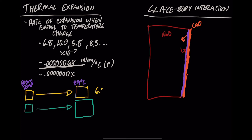Now, if this body has an expansion of 6.8 and the glaze has an expansion of 8.0, when that glaze expands — even though they were fused perfectly on top of each other — it puts stress on the glaze because it can't expand as much as it wants to. To release that stress, it causes micro-cracks all the way down to the body, and that is what crazing is. That's why glaze fit is so important: these two numbers need to match in order for no flaws to happen.